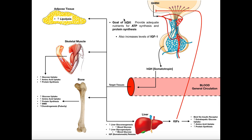In skeletal muscle, growth hormone stimulates glucose uptake by increasing the number of glucose transporters in the membrane of skeletal muscle cells. If the muscle cells put more glucose transporters in their membrane, they can uptake more glucose. Also, amino acid uptake is increased by a similar mechanism. In conjunction with the increased amount of ATP from all the glucose uptake, amino acids can be strung together into proteins. So overall, growth hormone increases protein synthesis all over the body, but especially in skeletal muscles.